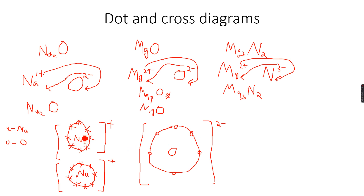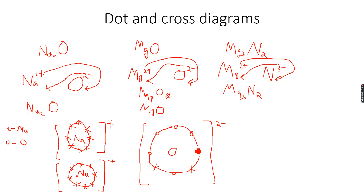When the first sodium atom lost one electron, that was gained by the oxygen. And when the other sodium atom lost one electron, that was also gained by the oxygen. So it has gained two electrons — you can see by these crosses that it has gained two electrons. That's why it now has eight electrons, so it is stable, and it has a two negative charge.